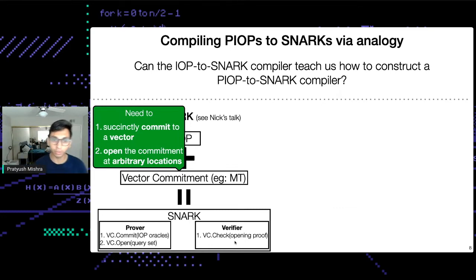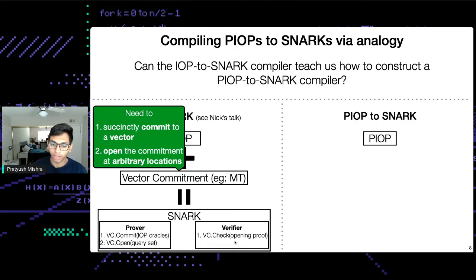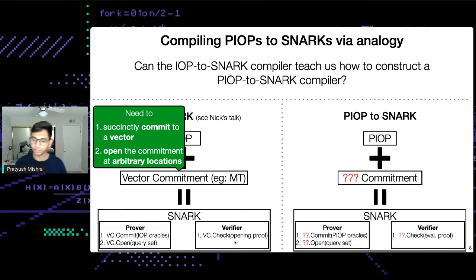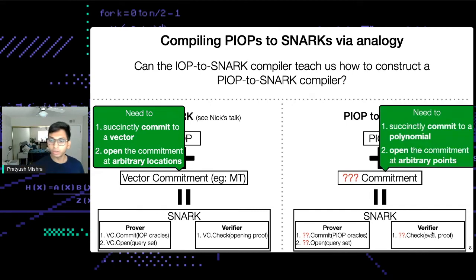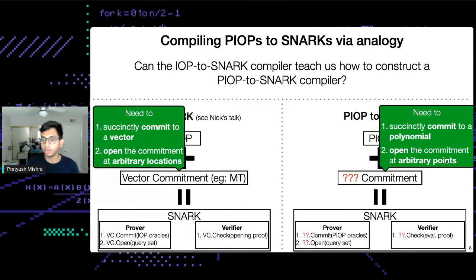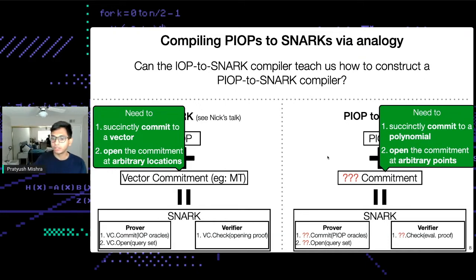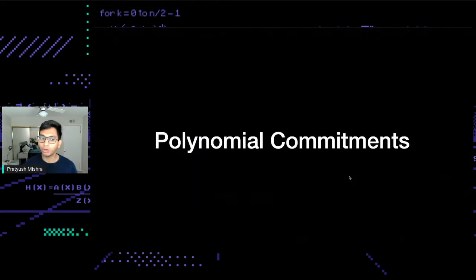For this to work, we need our vector commitment to succinctly commit to the vector and provide a short proof of the commitment opening. In the Merkle tree case, the succinct commitment is the root and the opening proof is the Merkle tree path, which is logarithmic in the size of the oracle. Moving to the PIOP world, we now need to commit to polynomials and prove they are correctly evaluated at some challenge points — so we want a polynomial commitment.